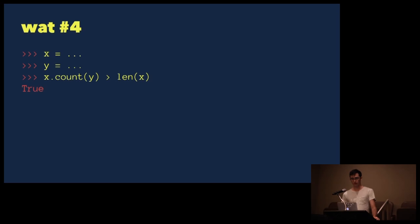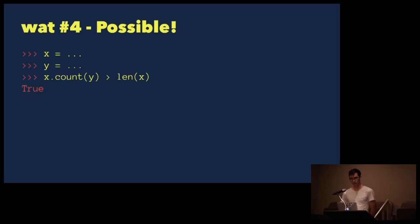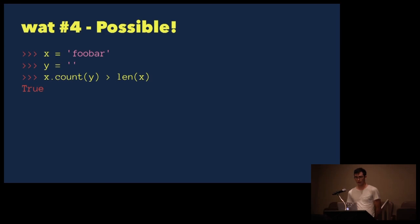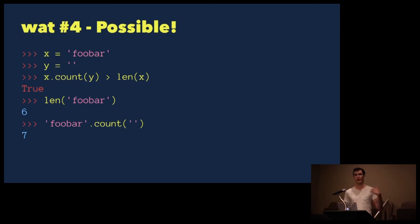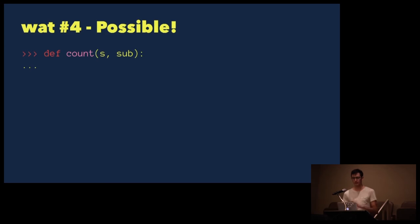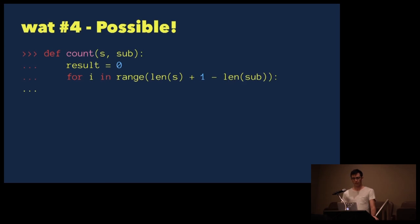Watt number four: if we have two variables x and y, can we set x such that the number of times y appears in x is more than the length of x? This Watt is actually possible. If we set x to really any string at all, and set y to the empty string, when we get the length of x we get something like six. But if we count the number of empty strings in that string, we get actually more than the actual length of the string.